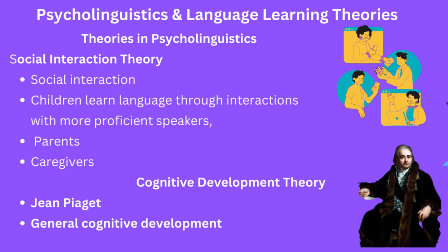The social interaction theory was first proposed by Vygotsky, who stressed that social interactions are crucial for cognitive development. The cognitive development theory holds that language acquisition is closely tied to the child's overall cognitive development. Children learn language through building mental representations of the language they hear and using these representations to understand and produce language. This theory emphasizes internal cognitive processes such as memorization and problem solving, and was first proposed by Jean Piaget, who argued that cognitive development is closely tied to language development. These theories will be discussed in detail in our next few lectures.